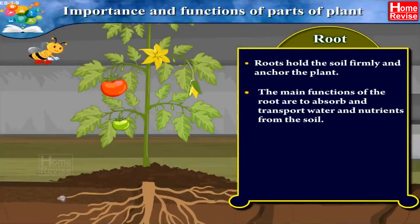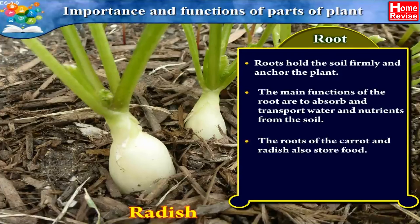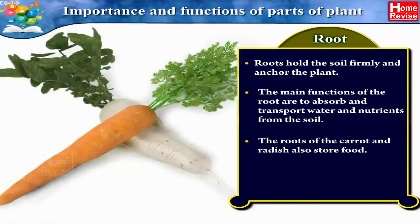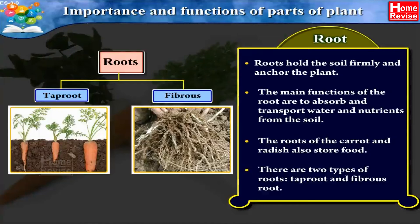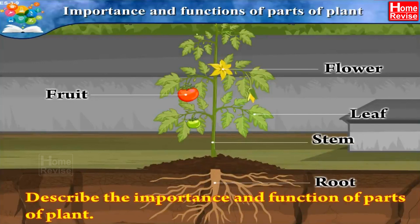The fifth part of the plant is the root. Roots hold the soil firmly and anchor the plant. The main functions of the root are to absorb and transport water and nutrients from the soil. The roots of carrot and radish also store food. There are two types of roots: taproot and fibrous root. Note that you might get a question like: describe the importance and functions of parts of a plant.